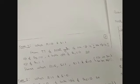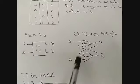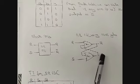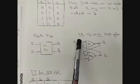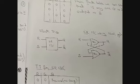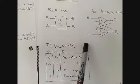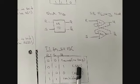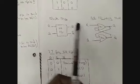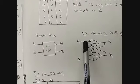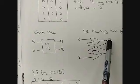Case two: when R=0 and S=1. Since S=1, one input is one, so the output of G2 is zero, meaning Q-bar=0. Then at G1, R=0 and Q-bar=0 — both zero, so the output is one, giving Q=1. So when R=0 and S=1, Q=1: the flip-flop is set.